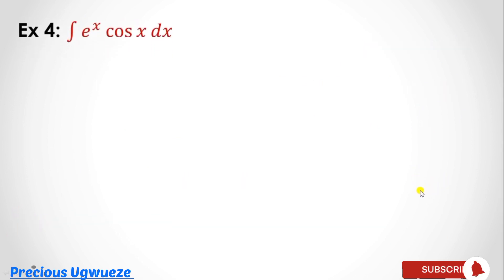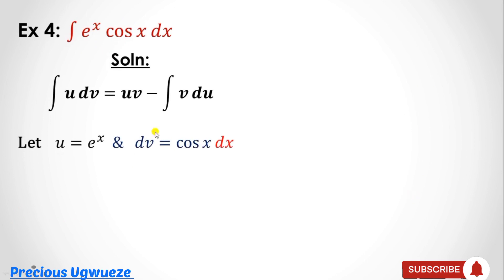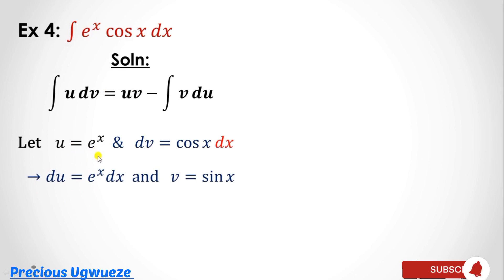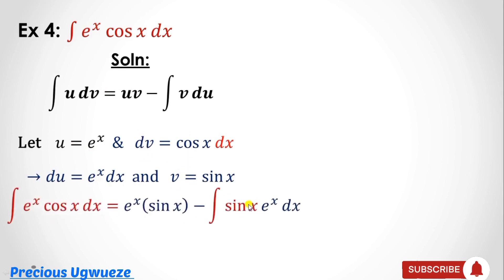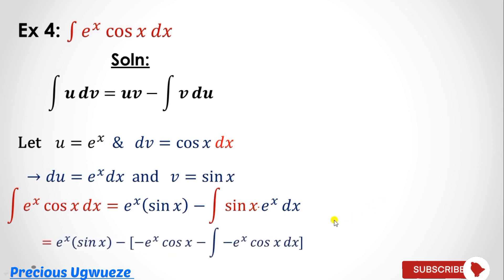Example 4: integrate eˣ·cos(x) with respect to x. State your formula and choose u and dv — either term can serve as u. We choose u = eˣ and dv = cos(x)dx. Differentiating eˣ gives du = eˣ dx. Integrating cos(x) gives v = sin(x). After substituting, we get eˣ·sin(x) minus ∫sin(x)·eˣ dx. Note that this remaining integral is again a product.